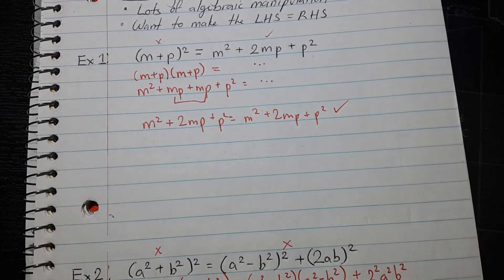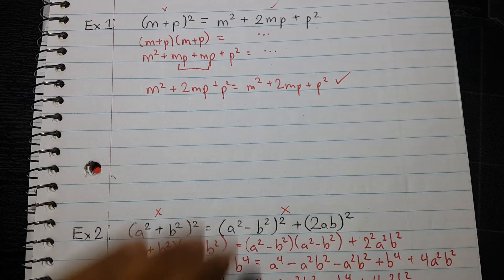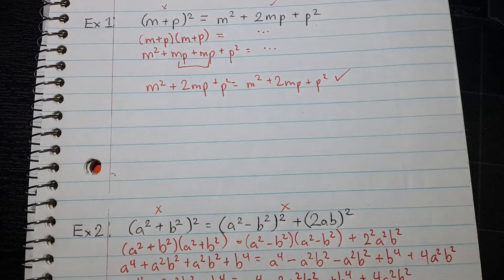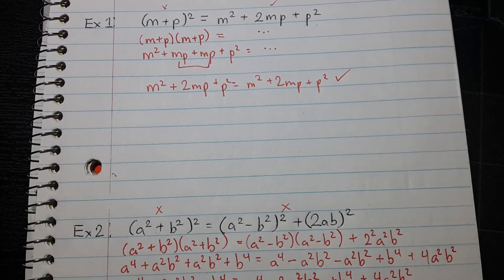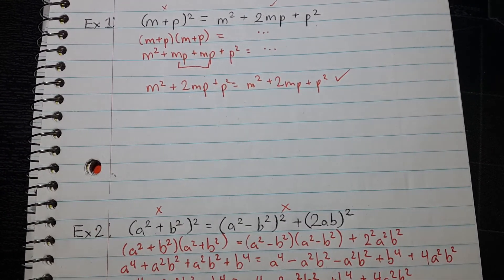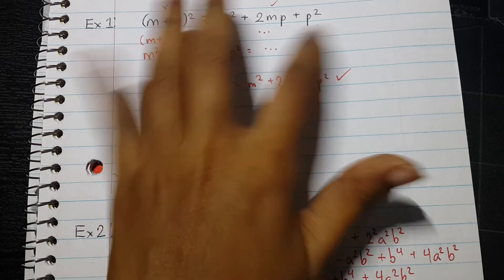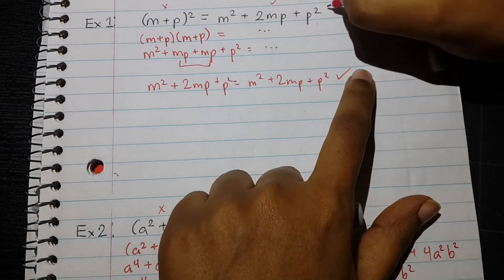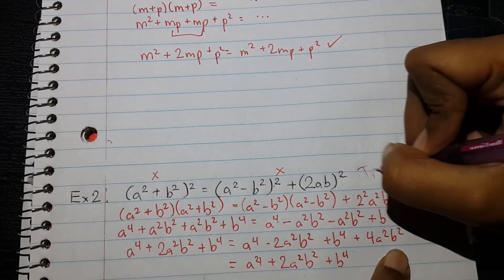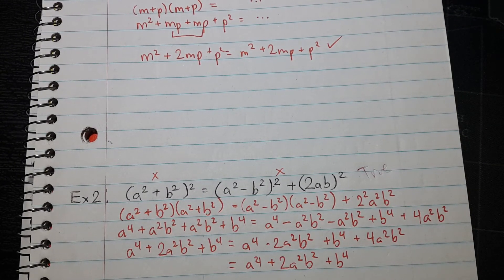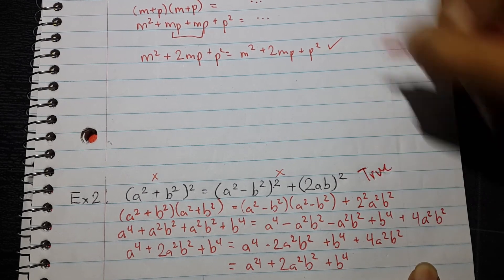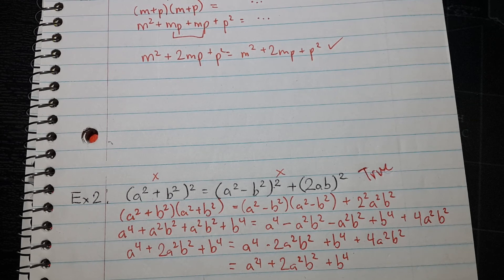That was a case where I had to manipulate both sides, whereas the first example only required manipulating the left-hand side. When proving polynomial identities, use your knowledge of algebra and combining like terms to show that LHS equals RHS. If the two sides end up equal, the equation is true. If they don't equal each other, you have a false equation. If you have any questions, leave them in the comments below — like and subscribe and I'll make more videos.